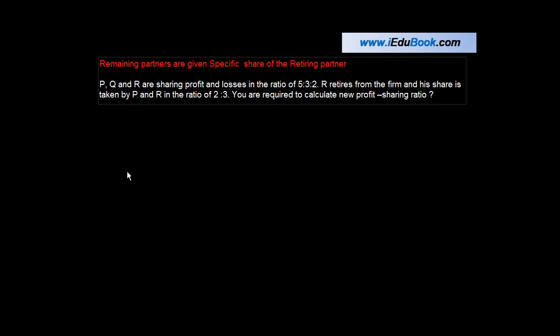P, Q and R are sharing profits and losses in the ratio of 5:3:2. R retires from the firm and his share is taken by P and Q in the ratio of 2:3. I'm sorry, this is not R because R has retired, so this is Q. You are required to calculate the new profit sharing ratio.